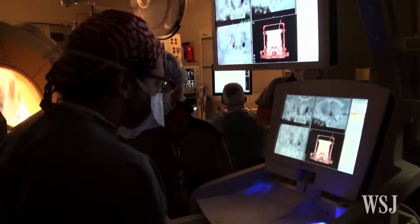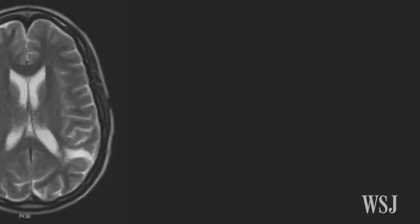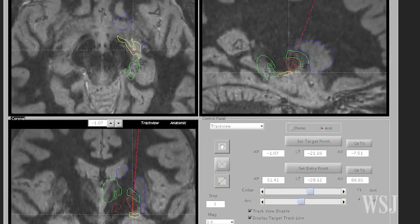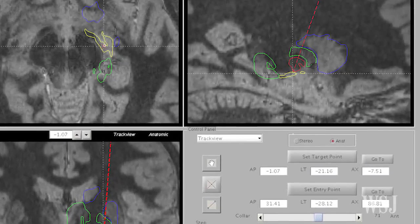This is how DBS works. A neurologist and other specialists use MRI and CT scans of the patient to map out and hone in on the location of the brain that will be targeted.